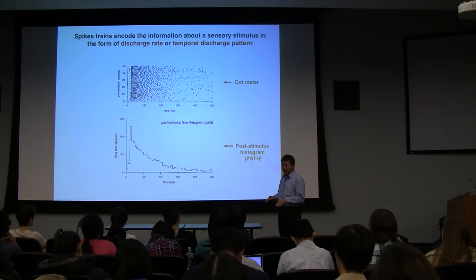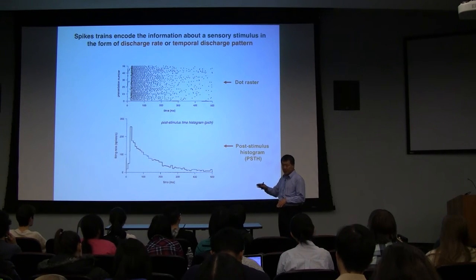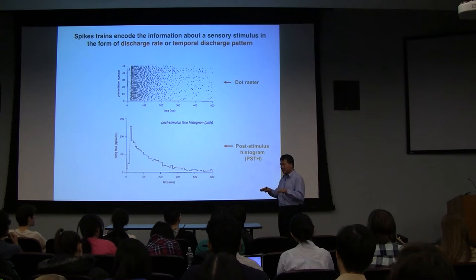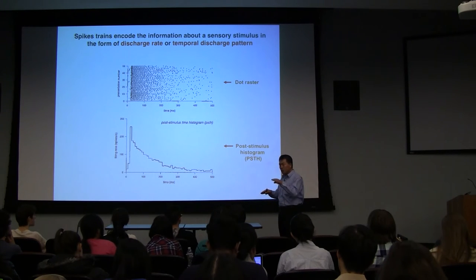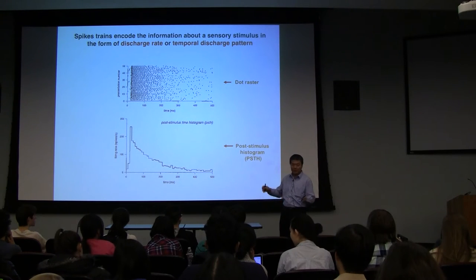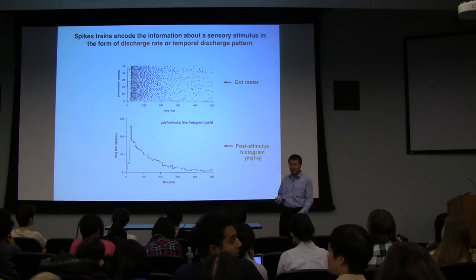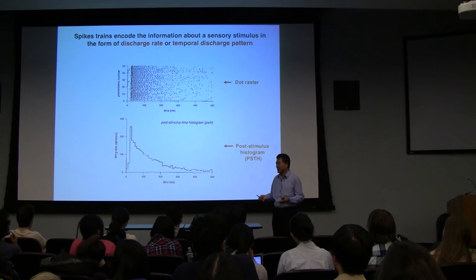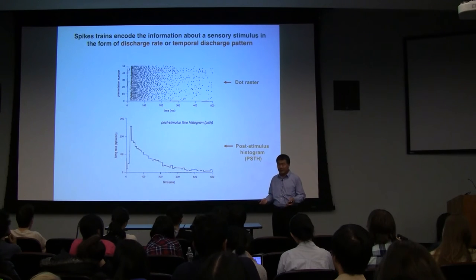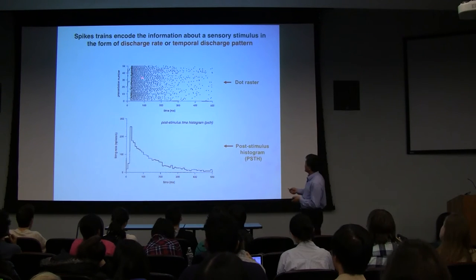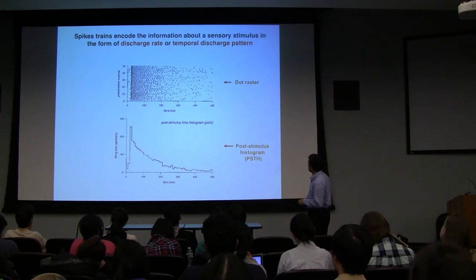Suppose you have 20 spikes per 500 milliseconds. Normalized to per second, that's 40 spikes per second, so the discharge rate for this neuron would be 40 spikes per second. Now if I make that sound louder, neurons are going to fire more — you might calculate 100 spikes per second. That's the first measure: discharge rate. It's very simple, but very useful.